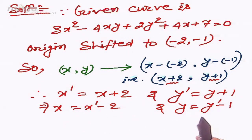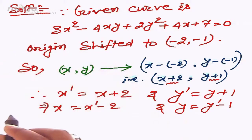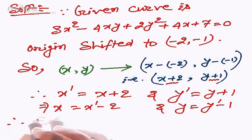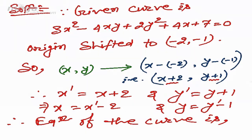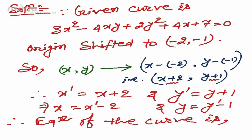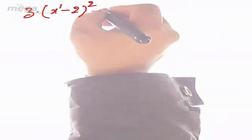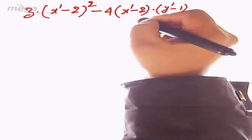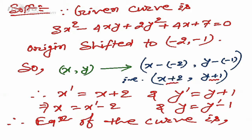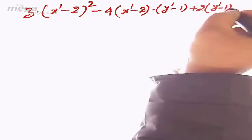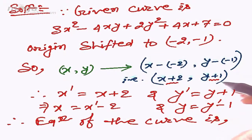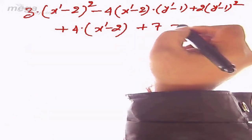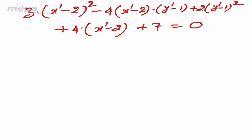Therefore, the equation of the curve becomes: 3(x' - 2)² - 4(x' - 2)(y' - 1) + 2(y' - 1)² + 4(x' - 2) + 7 = 0. We will now simplify this to get the final solution.